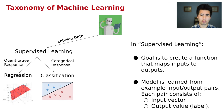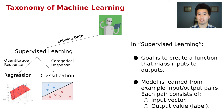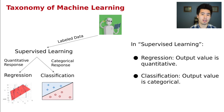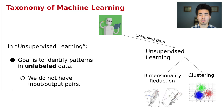With supervised learning, the goal was to create a function that maps inputs to outputs. These are models that expect you to have an output value or a true label for at least some subset of your data that you're using to train this model. We can think about this as regression or as classification, but both of these are supervised learning methods that assume you have this training data.